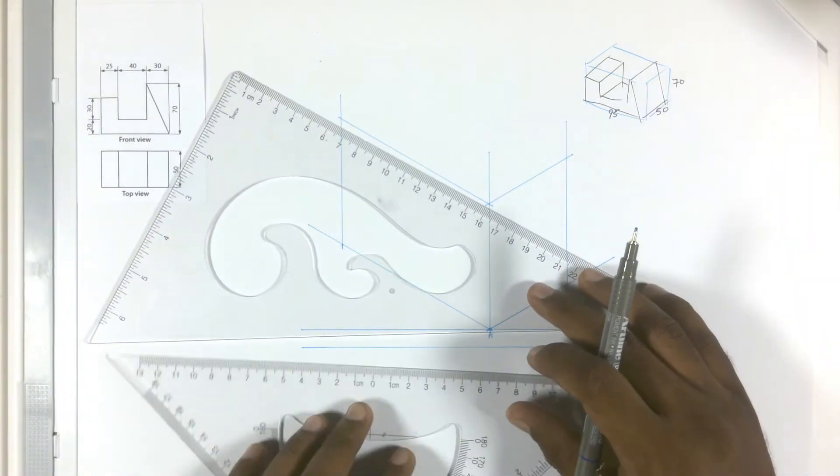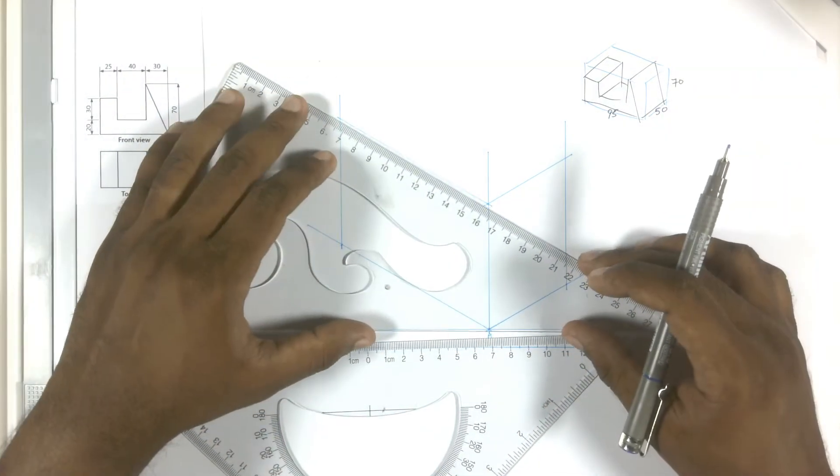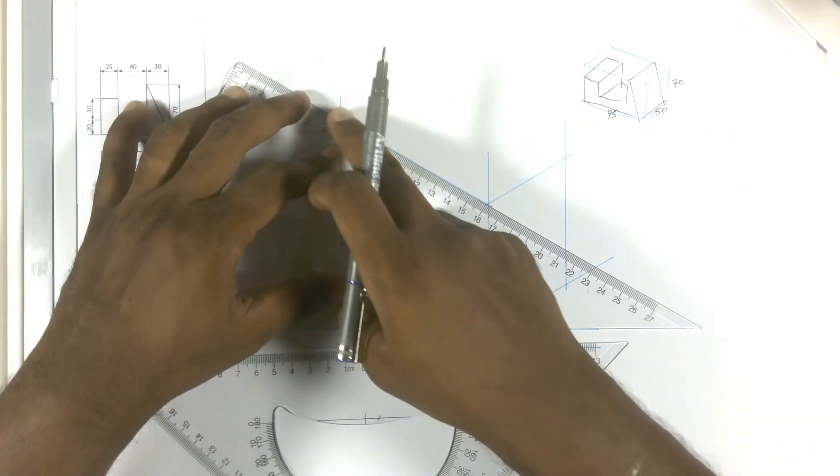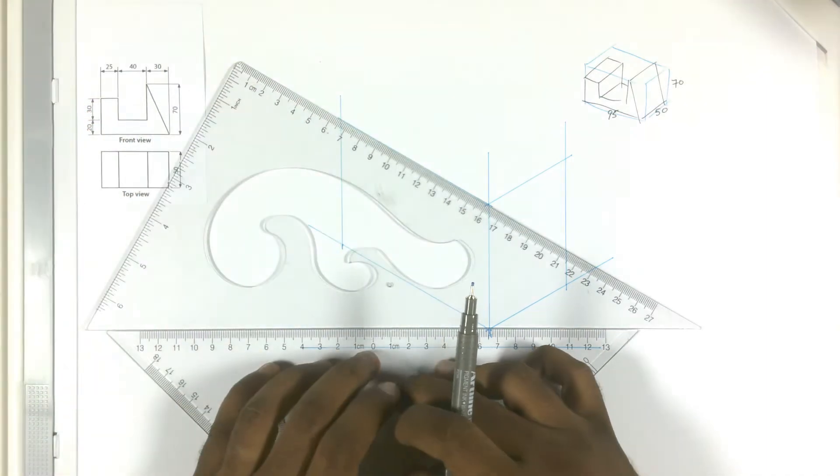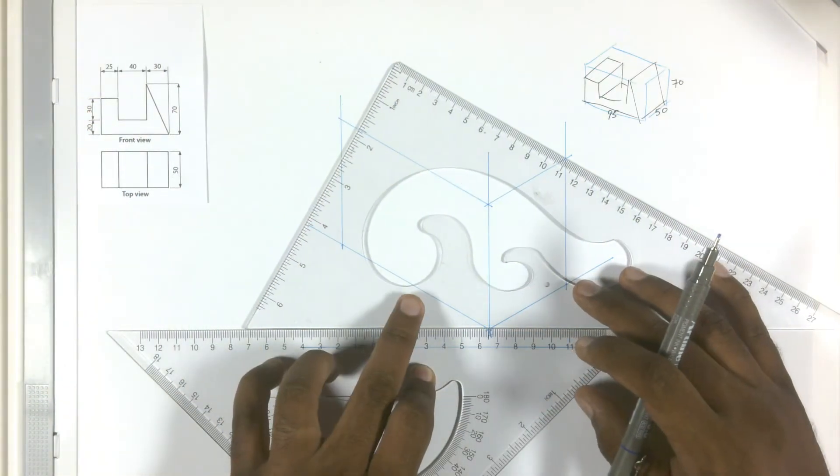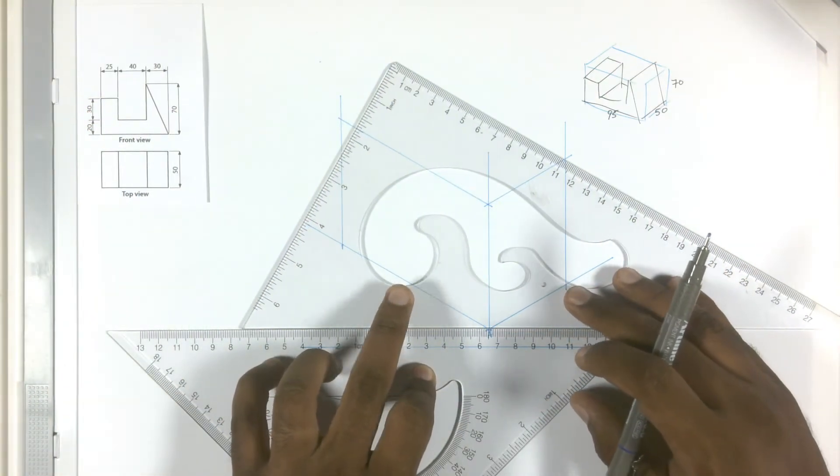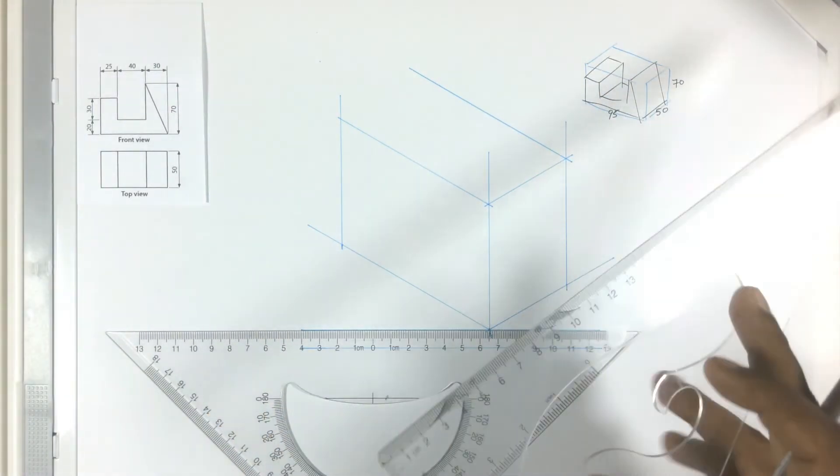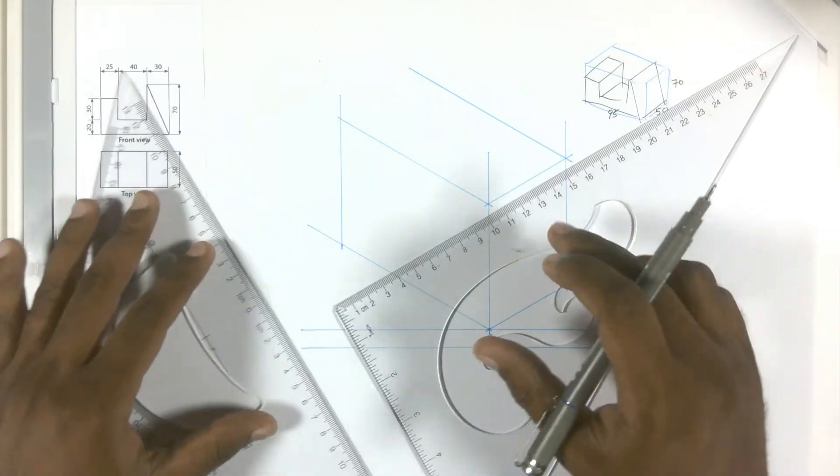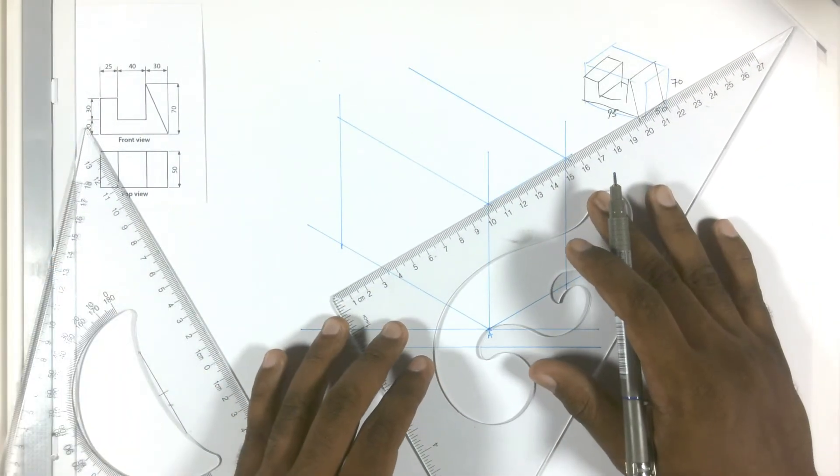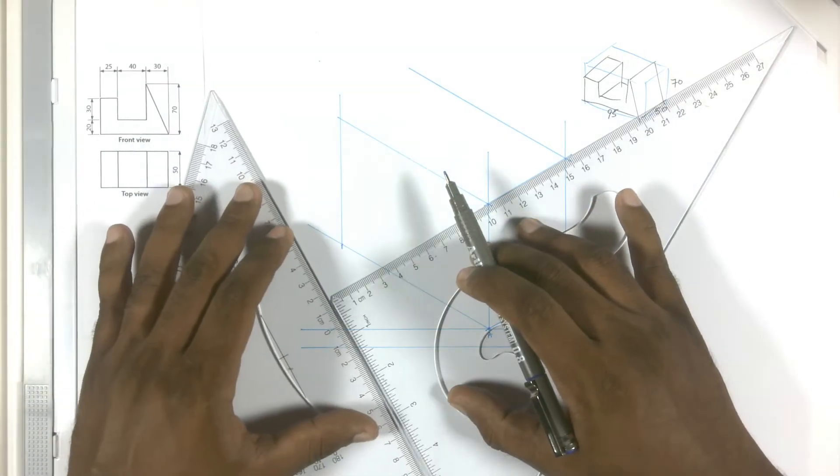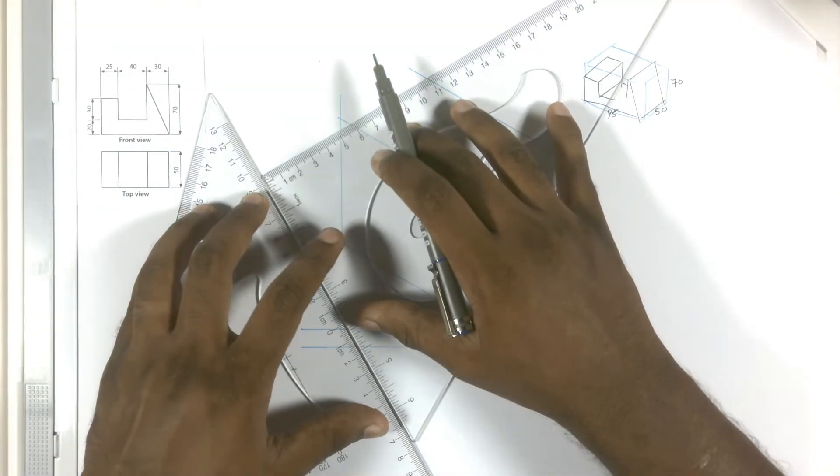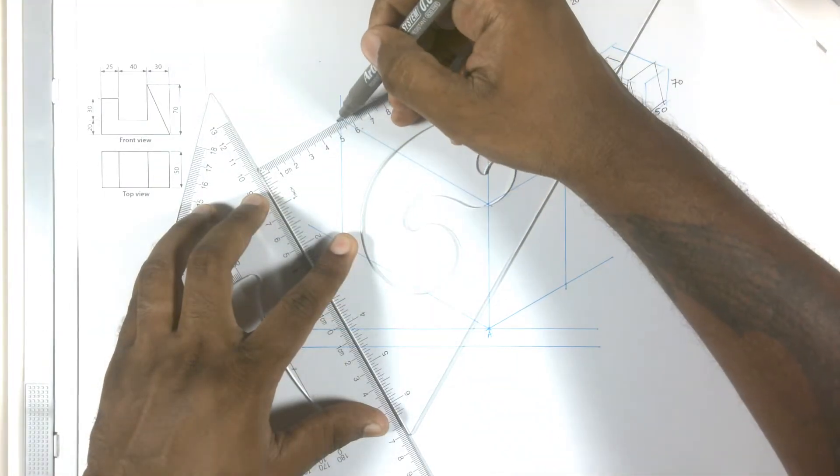We place your ruler on the line which you want to copy. Make sure that it is straight on the line. Use your other ruler as a guide. Then move it to your point and draw your line. Now same technique for the other side. Place your ruler on the line which you want to copy. Make sure that the ruler is straight on the line. We slide till we get to the point that we need, and we draw the line.